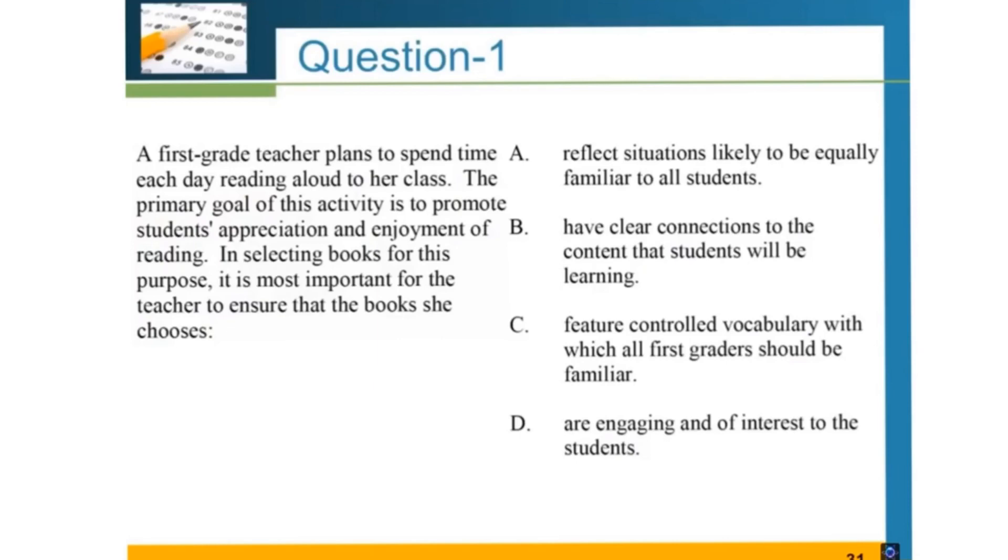This question is mainly about the most important stuff in selecting books to promote students' appreciation and engagement. When you look at the answer choices, we are looking for an answer that gets students' attention and appeals to them. So the correct answer is D, because engaging and of interest to the students—that's when learning is happening.